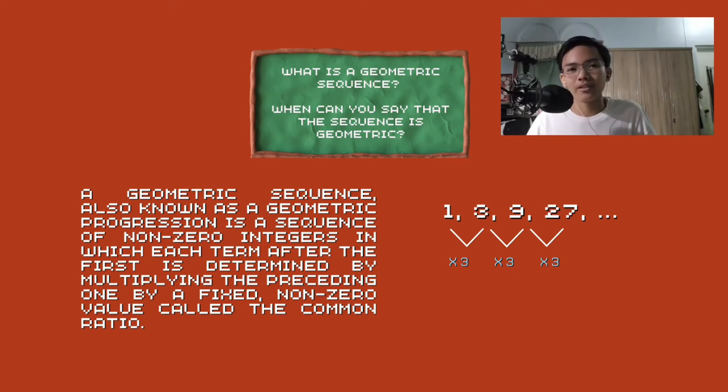What is a geometric sequence, and when can we say that a sequence is geometric? Well, a geometric sequence, also known as a geometric progression, is a sequence of non-zero integers in which each term after the first is determined by multiplying the preceding one by a fixed, non-zero value called the common ratio.